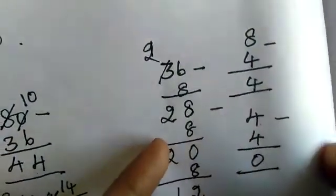So what is the HCF of 36 and 80? It is 4.